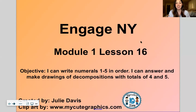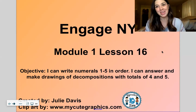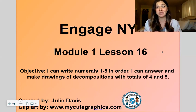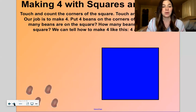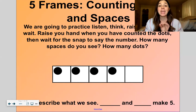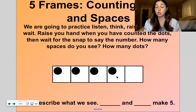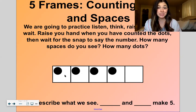So our goal for the day: I can write numbers 1 through 5 in order. I can answer and make drawings of decompositions with totals of 4 and 5, just like I already talked about. That is what we want to have achieved by the end of this lesson. Let's get started with a quick warm-up — one of my favorites. We've played this before. These are 5 frames counting dots and spaces. I'm going to show you a 5 frame and I want you to tell me how many spaces and how many dots you see.